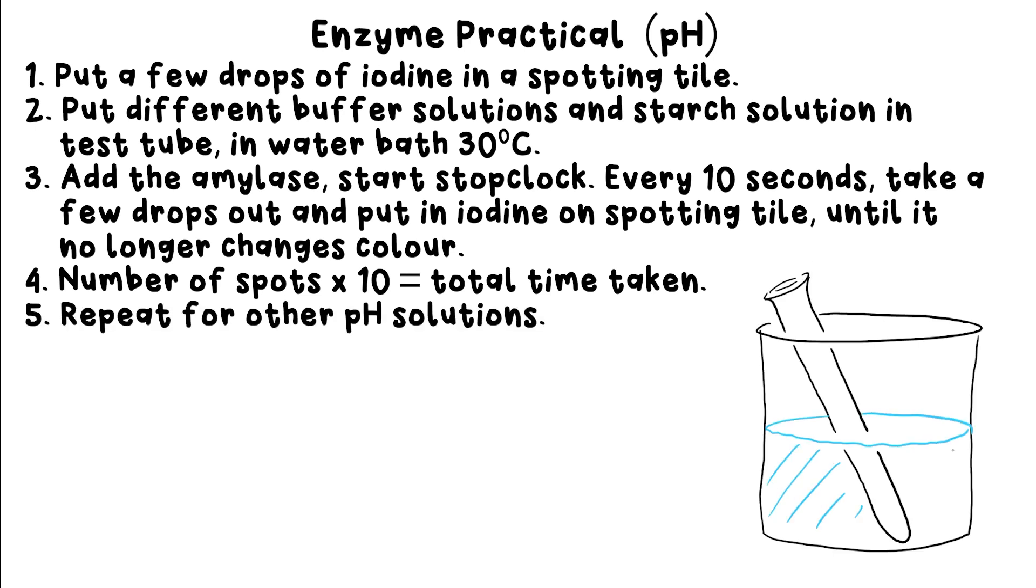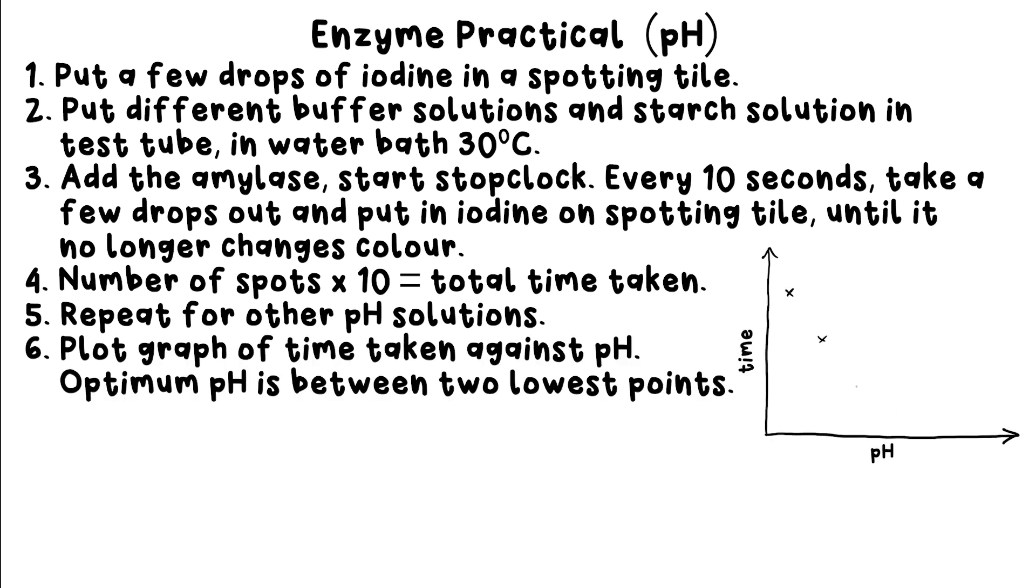Step five: start again and repeat this whole process for the other pHs. Step six: plot a graph of time taken against pH and draw a line of best fit.